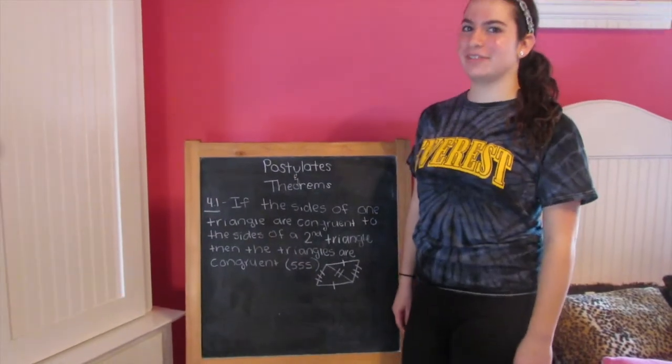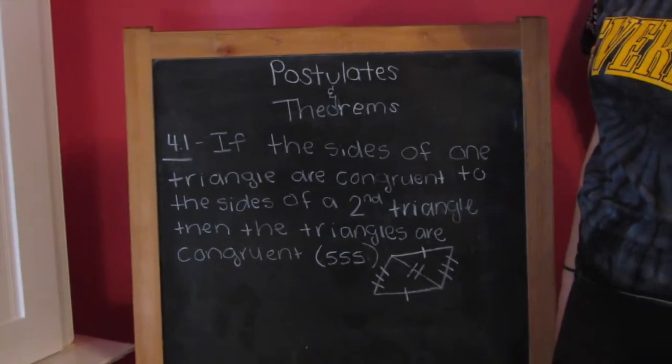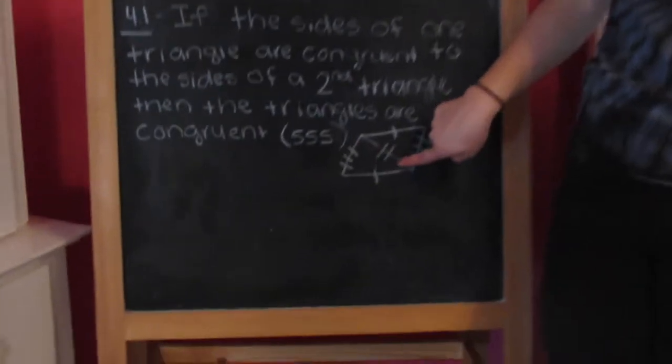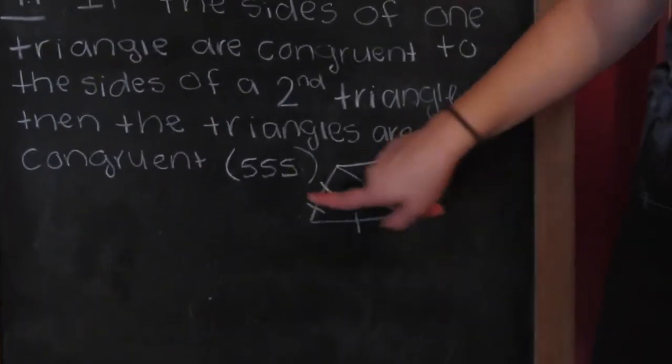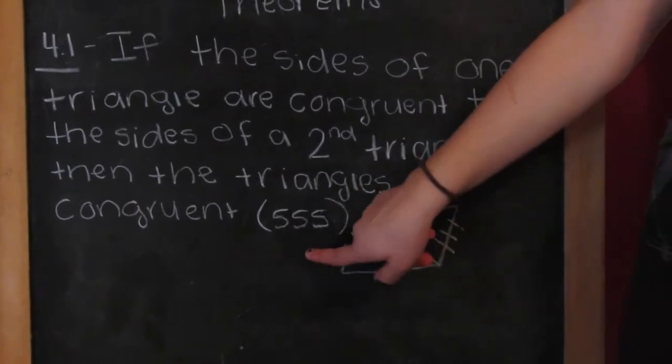So now a few questions before we get started. If the sides of one triangle are congruent to the sides of the second triangle, then the triangles are congruent by SSS. So these two sides are congruent, this side is congruent to itself by reflexive, and these two sides are also congruent. So three sides are congruent, which means it's congruent by SSS.